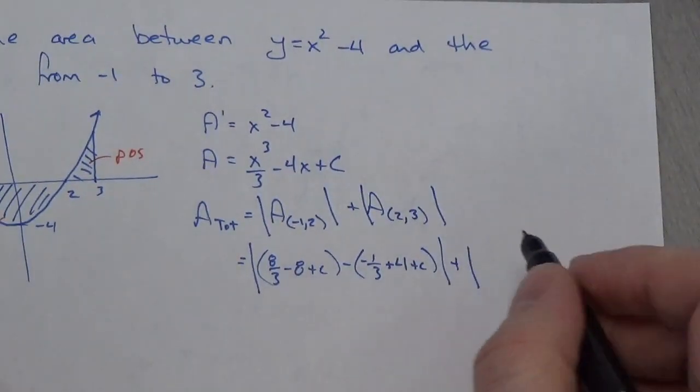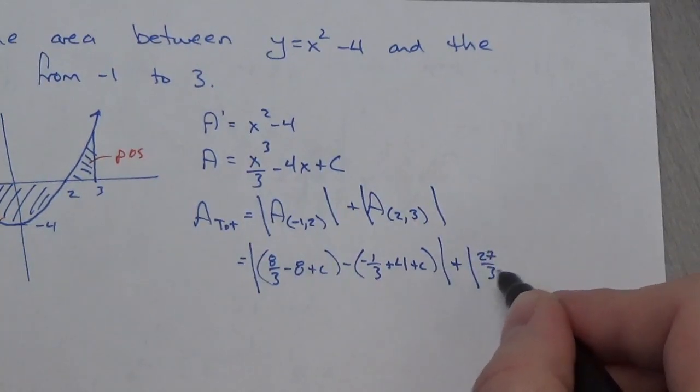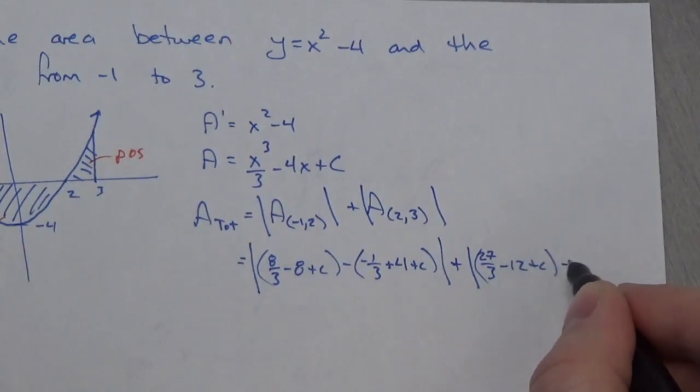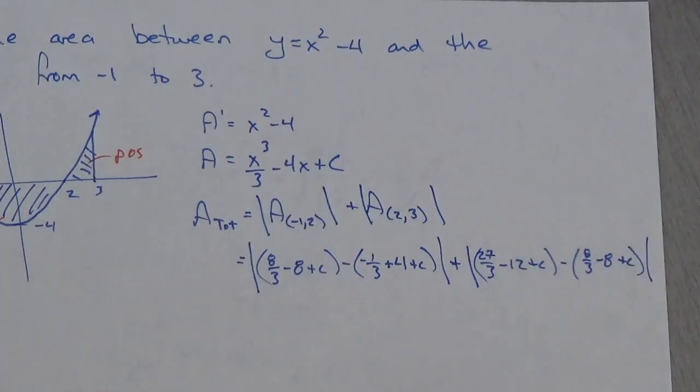plus the absolute value, now if I plug in 3, 3 cubed is going to be 27 over 3 minus 12 plus c, minus, and then it's going to be, once again, 8 thirds minus 8 plus c, the absolute value.